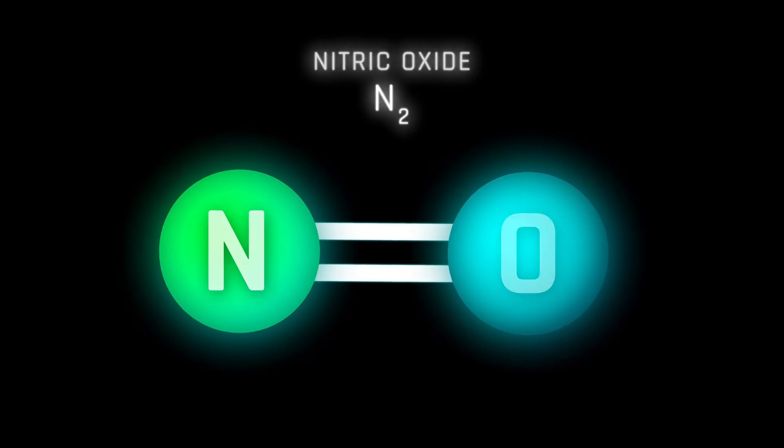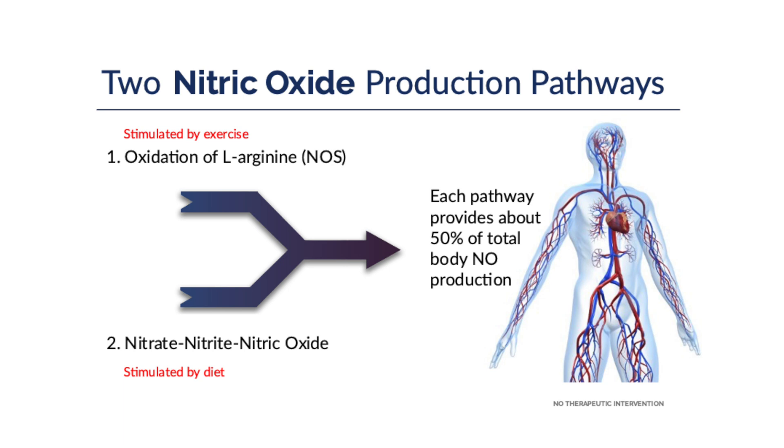Nitric oxide — NO — is a gas. There are two pathways to produce it, and we have a slide showing those two. Without going into the in-depth biochemistry, the first is called endothelial function. An enzyme called nitric oxide synthase is found in our endothelial cells, and when it becomes activated it can make nitric oxide. That was the first pathway discovered, responsible for the second-to-second regulation of blood flow and oxygen and nutrient delivery.